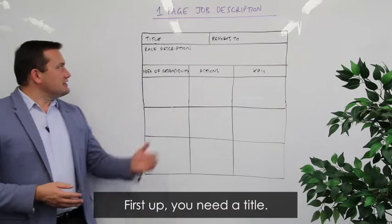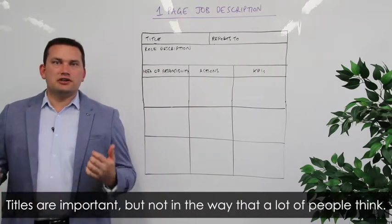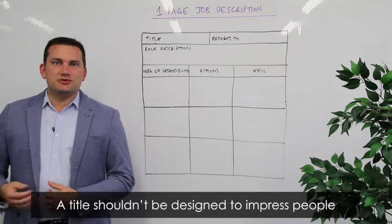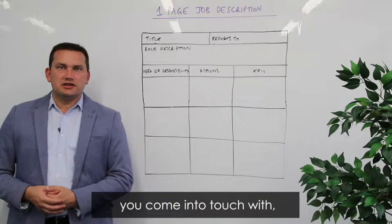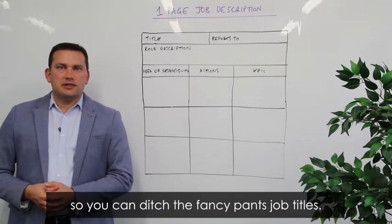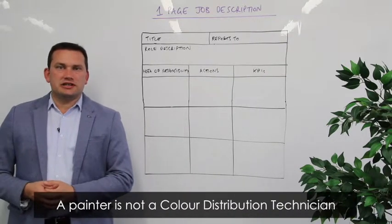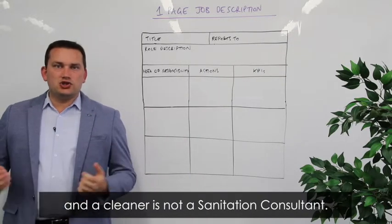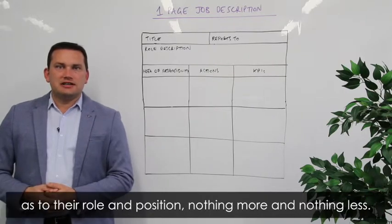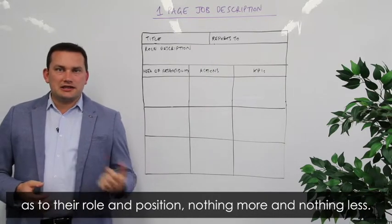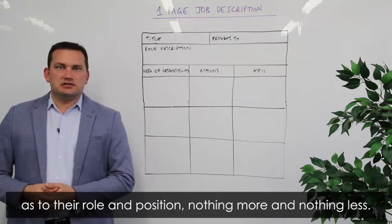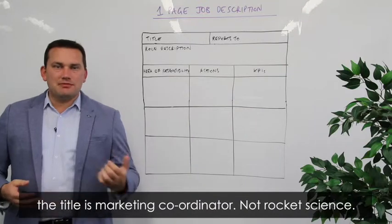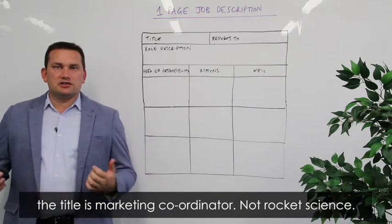First up, you need a title. Titles are important, but not in the way that a lot of people think. A title shouldn't be designed to impress people you come into contact with, so you can ditch the fancy job titles. A painter isn't a colour distribution technician and a cleaner is not a sanitation consultant. Your job title exists to give a team member clarity as to their role and position — nothing more and nothing less. So if the role involves coordination of the business's marketing activities, the title is simply marketing coordinator.